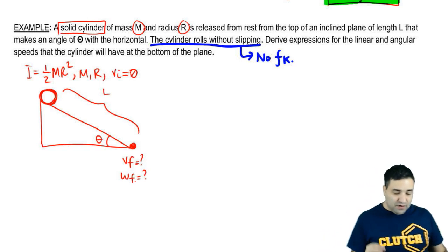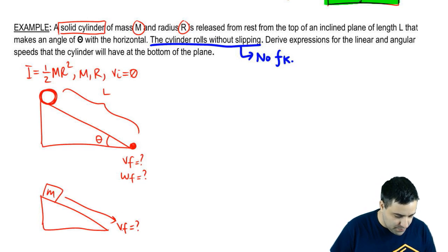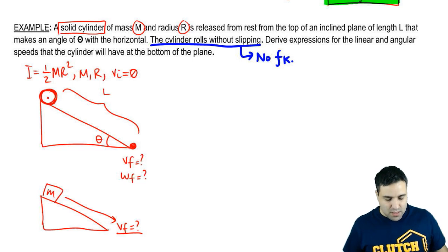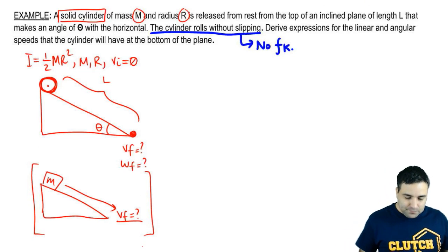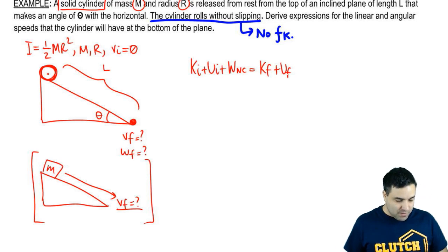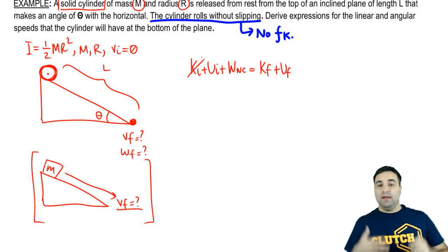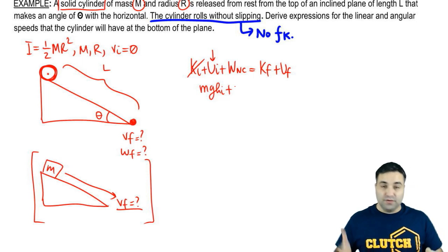And we're going to use conservation of energy. This is very similar to when we used conservation of energy to find the final velocity of a block at the bottom. The big difference now is it's obviously not a block, it's rotating. So we have rotational energy as well. So kinetic initial plus potential initial plus work non-conservative equals kinetic final plus potential final.